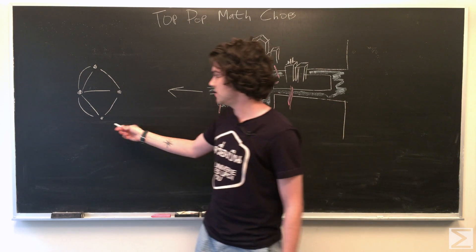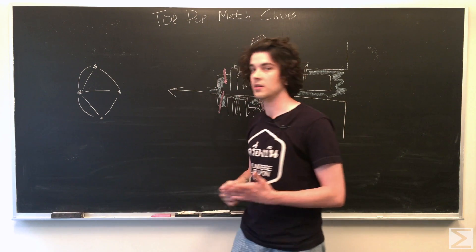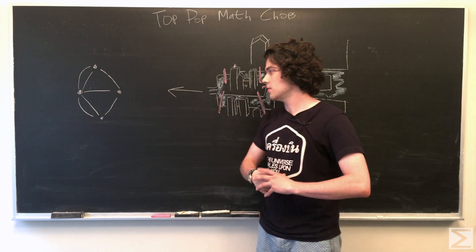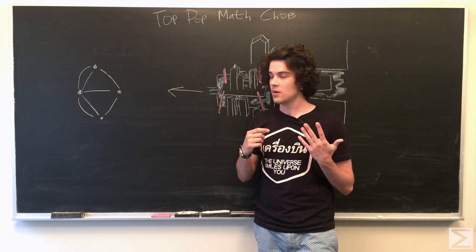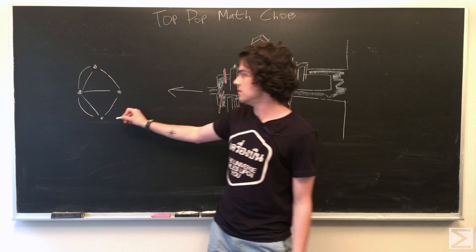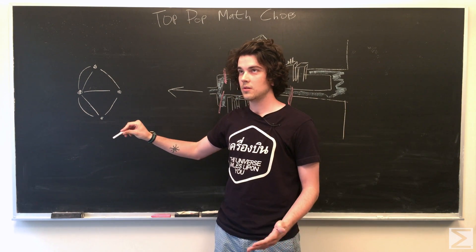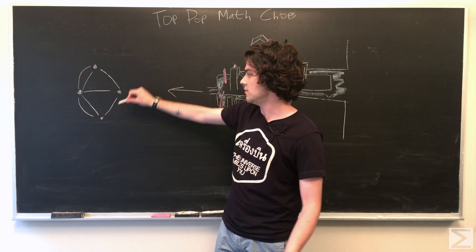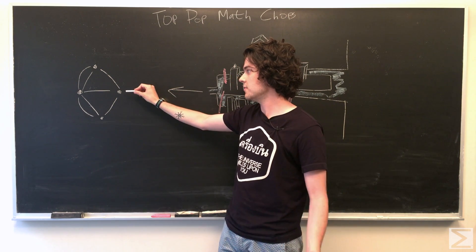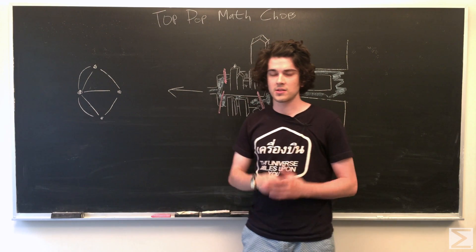We call the number of lines for each vertex the degree of that vertex. So intuitively, if you're on a vertex that you have traveled to, you have to have traveled there and you have to leave. So that's two.